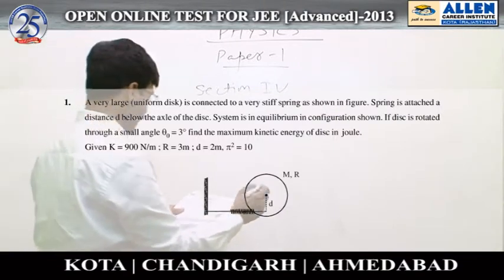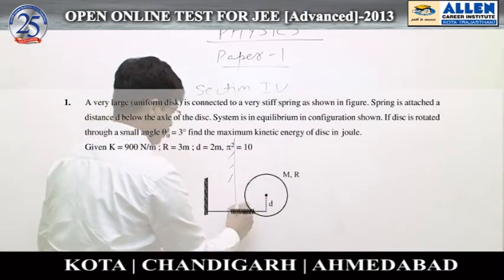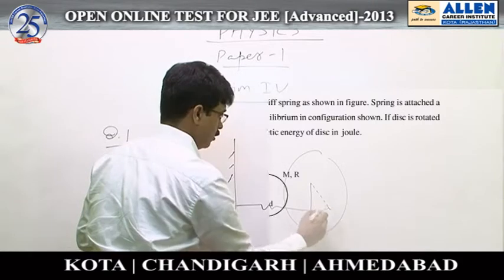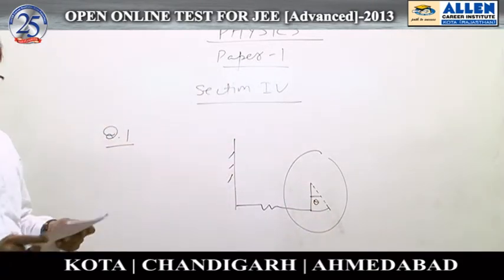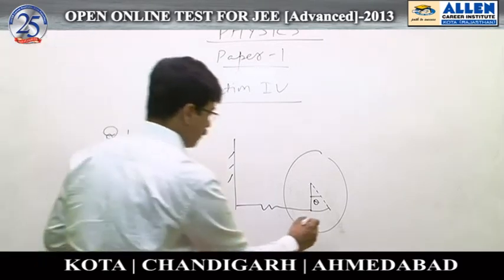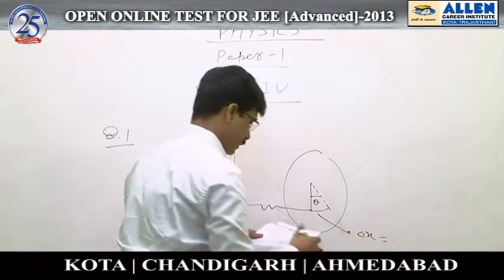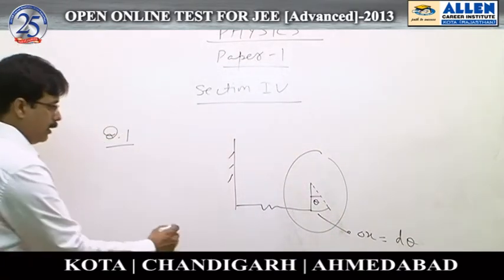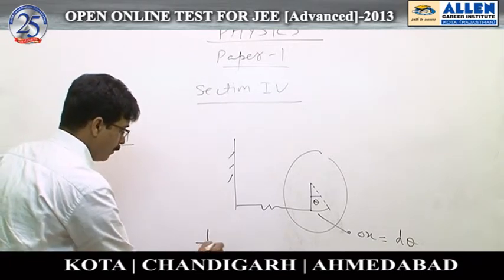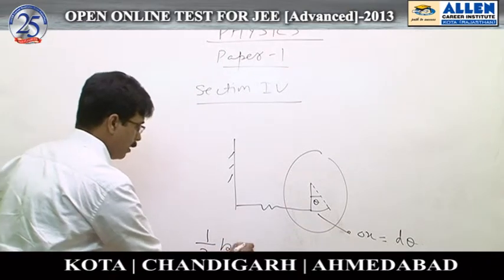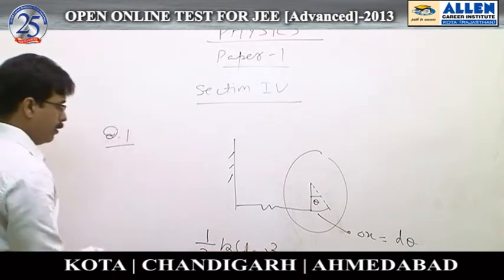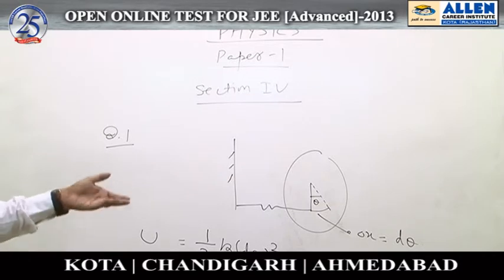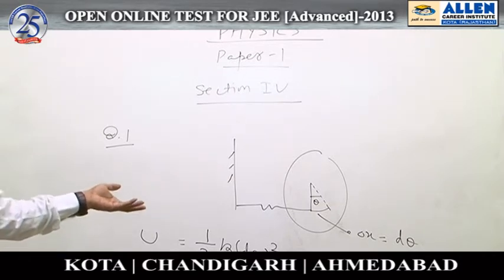In question number one, interior type: when the disc is rotated through angle theta, the extension of the spring becomes d·theta. The vibrational energy of this system becomes (1/2)·k·d²·theta², which is initially in the form of potential energy. When we release this system, the system will maintain this vibrational energy.